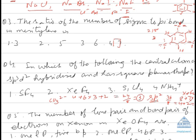Once you have predicted the hybridization, you can determine the shape: sp is linear, sp2 is trigonal planar, sp3 is tetrahedral, sp3d is trigonal bipyramidal, and sp3d2 is octahedral. However, if there is a lone pair of electrons, it will distort the geometry. For example, if hybridization is sp3 but there is one lone pair, the shape will be pyramidal, not tetrahedral. If it is sp3d with one lone pair, it will be distorted tetrahedral, not trigonal bipyramidal. Now, the question asks: in which of the following does the central atom have sp3d2 hybridization?